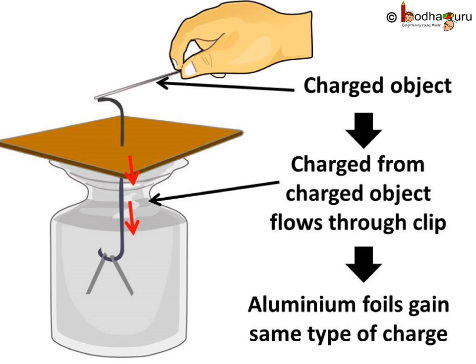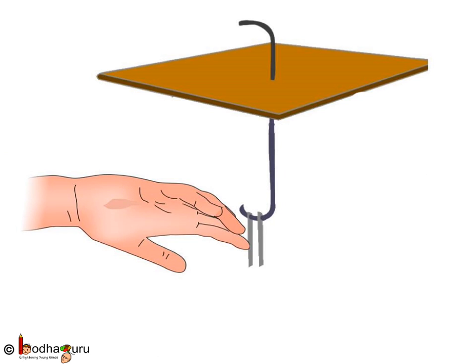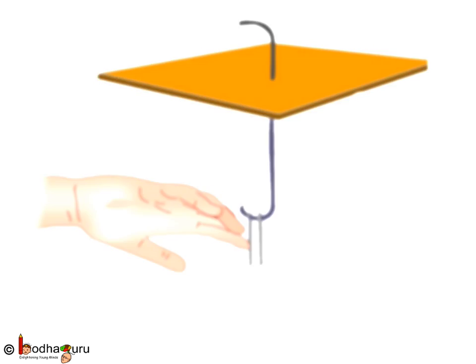Place the cardboard as the lid of the jar. If we touch a charged object with the metal clip, the aluminum foil strips repel each other — meaning they acquired the same kind of charge. This shows that charge from a charged body can flow into them. So we can say electrical charge can be transferred from a charged body to another through a metal conductor. If we then touch the paper clip, the aluminum foil strips return to their normal position, meaning they lost the electric charge — the foil strips are now discharged.